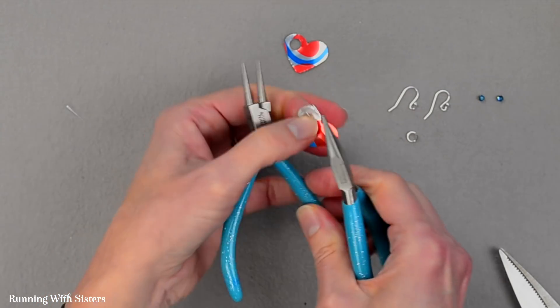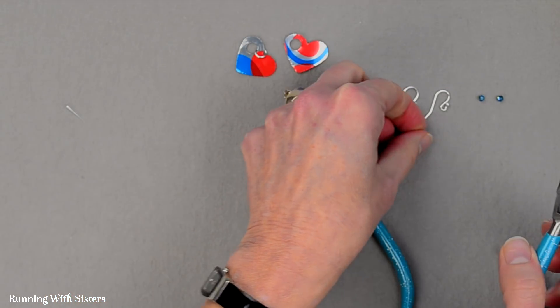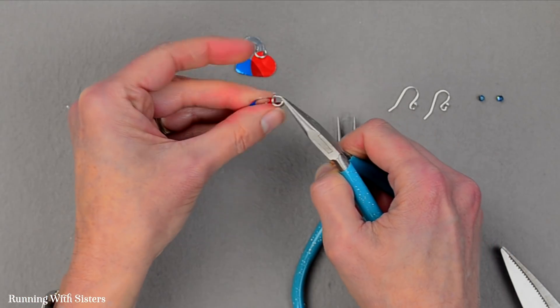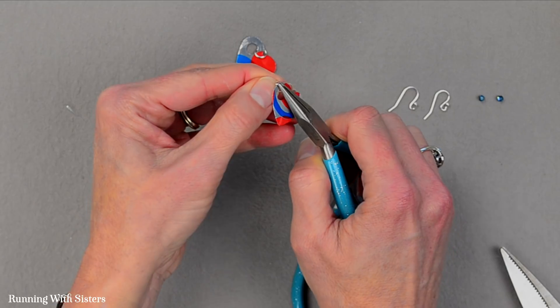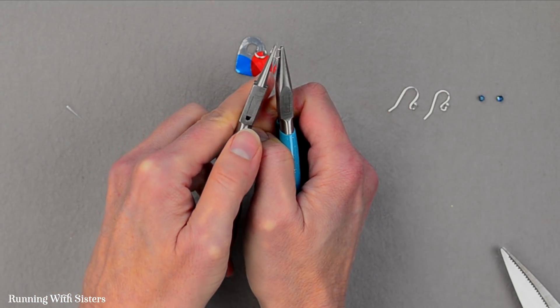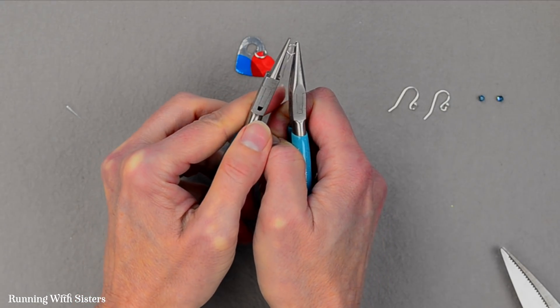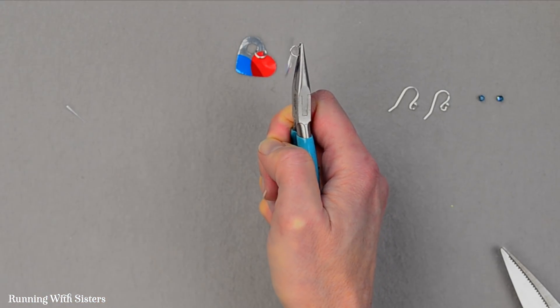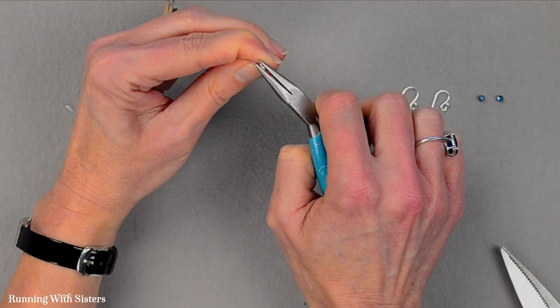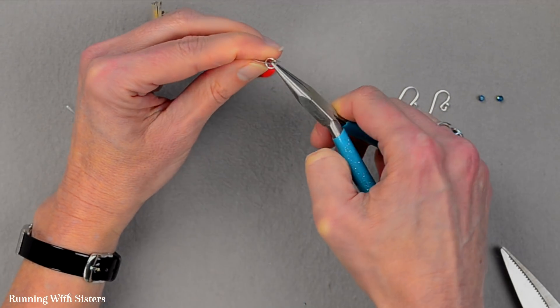And I'll do that again with my other earring. Just like that. And then close it. You can always make sure that your jump ring is closed by sort of pressing across the opening also to make sure that it's closed.